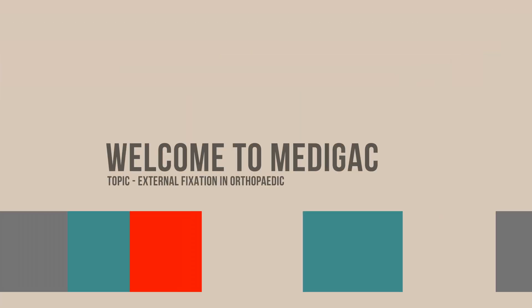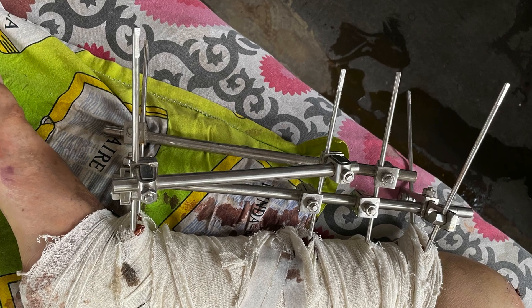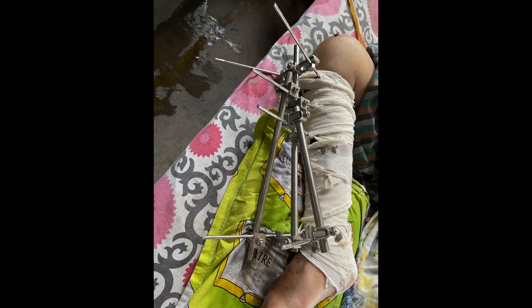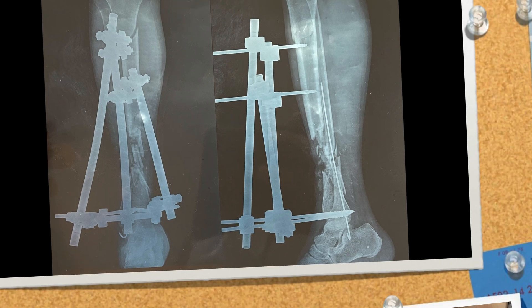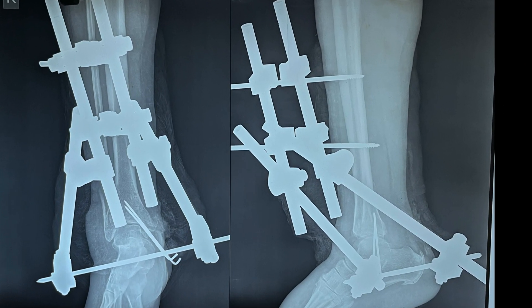Hello everyone, welcome to Medigac. Today we are going to discuss about external fixator in orthopedics. To maintain the stability and alignment of broken bones, an external fixation device may be employed. The device can be externally adjusted to make sure the bones stay in the best possible position throughout the healing process. When the skin around the fracture has been injured and children are involved, this device is frequently employed.